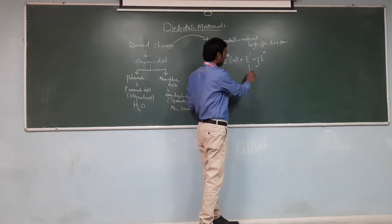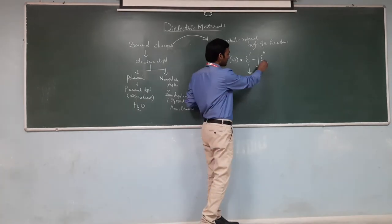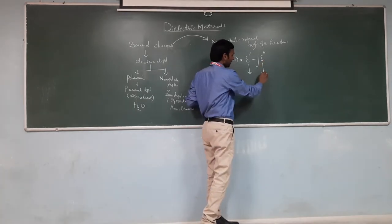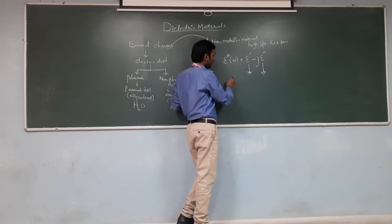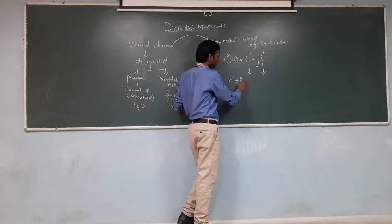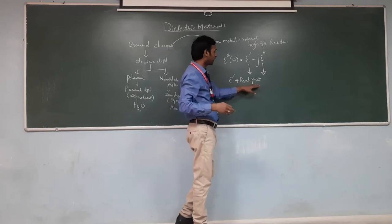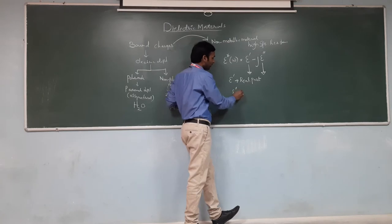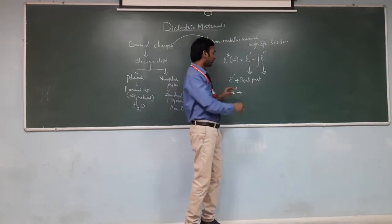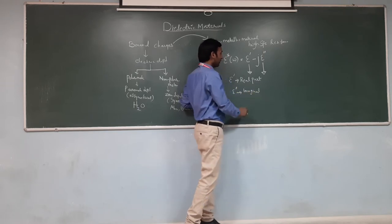The real part of the dielectric material is also called the dielectric constant. The real part is a measure of the amount of energy from the external electric field stored in the material. The imaginary part relates to the amount of energy lost from the material due to the external electric field.